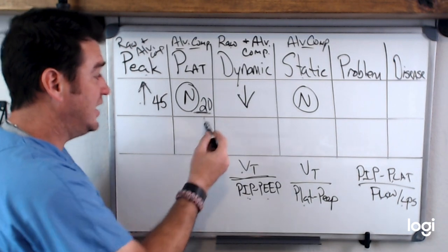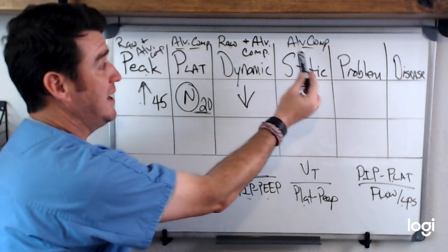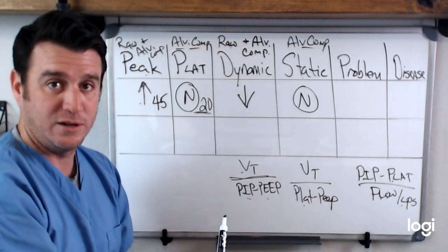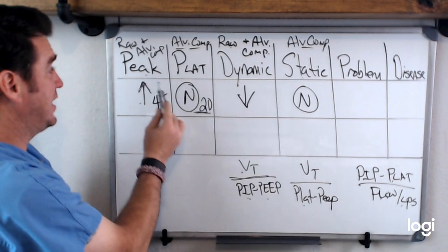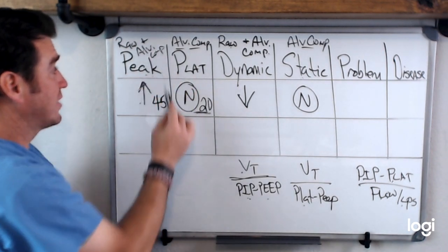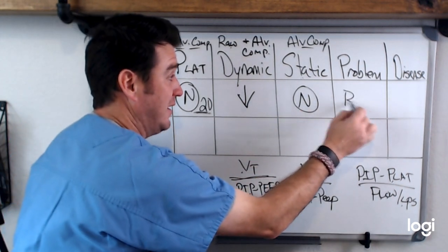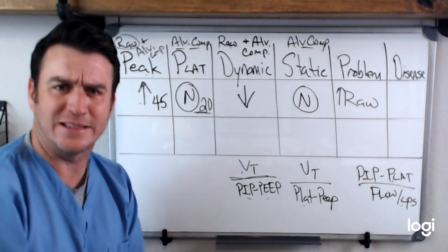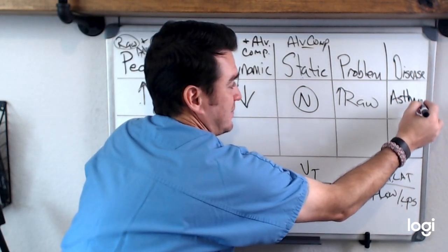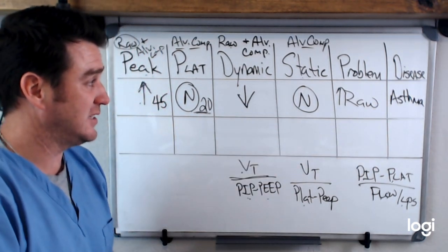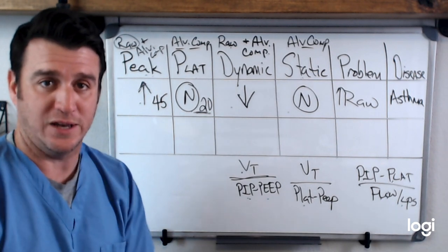If my plateau pressure is unchanged and in an acceptable range, then I do not have an alveolar compliance problem — this is why my static compliance is also unchanged. So if it's not an alveolar compliance problem and it didn't affect our plateau and our static, then when we look at our peak airway pressure, it must be an airway resistance problem. We have an increase in our airway resistance. The most common disease process that comes up here is going to be asthma — it would cause an increase in airway resistance as an airway problem, while alveolar compliance should remain normal, at least in the acute phase.